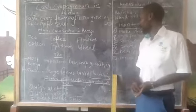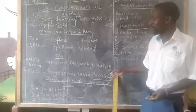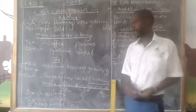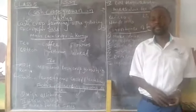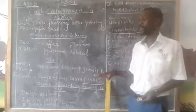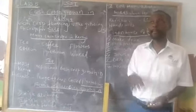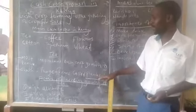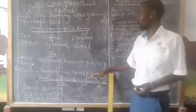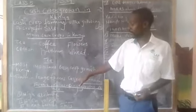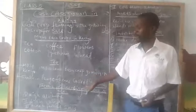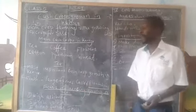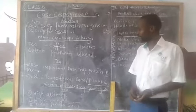So we have the factors influencing the growing of tea. One is high altitude — tea is grown in areas that have high altitude. Another factor is high rainfall. Areas where tea is grown are supposed to experience high rainfall throughout the year.